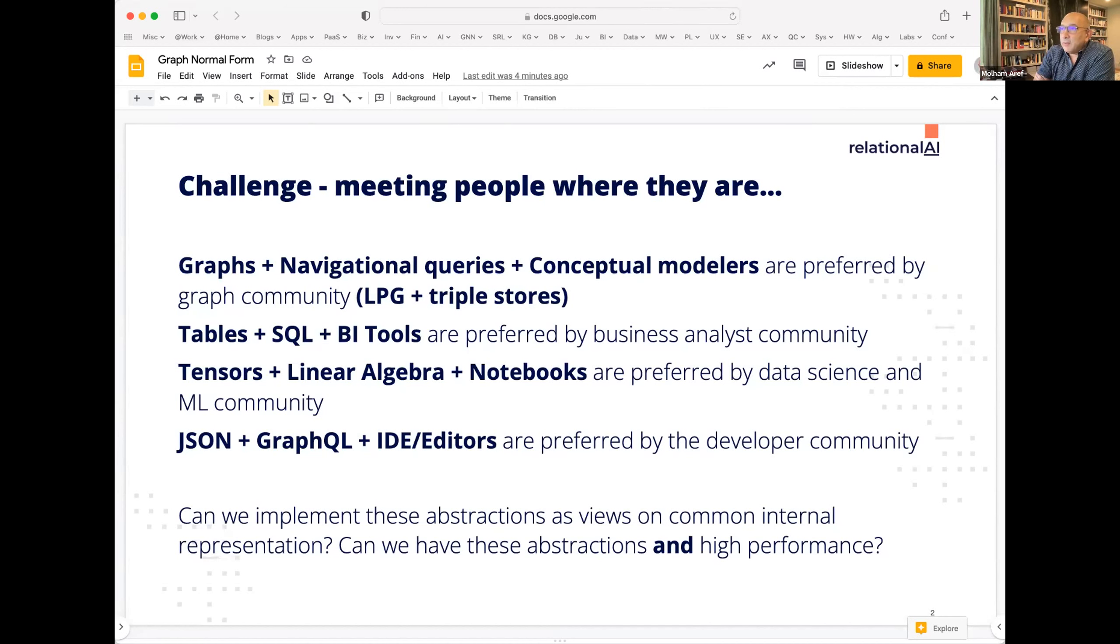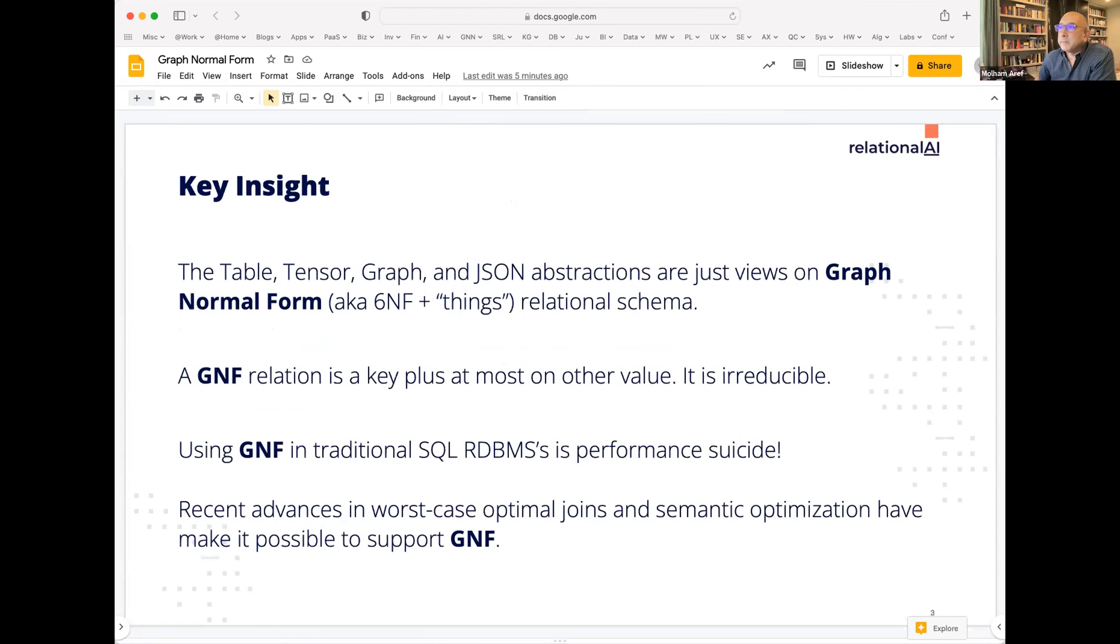So what we observe is that graphs and navigational queries and conceptual modeling environments are preferred by the graph community, actually in a couple of different flavors, LPG and triple store flavors. Tables and SQL and BI tools are preferred by the business analyst community. Tensors and linear algebra and notebooks are preferred by data scientists and the ML community, and JSON and GraphQL and IDEs and editors are preferred by the developer community. So we asked the question, can we implement these abstractions as views on some common internal representation and can we do that and still keep performance? Today I'm not going to address the performance dimension. We heard yesterday from Umbra and I think you get a glimpse of the kind of performance you can get if you do this the right way.